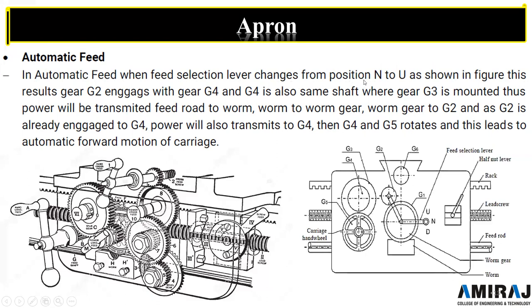For automatic feed: when the feed selector lever changes from position N to U, or automatic, what happens is that gear G2 comes into contact and engages with gear G4. Gear G4 is on the same shaft where G3 is mounted. Thus the power is transmitted through the feed roll to worm and worm to worm gear, and from worm gear to G2. Since G2 is already engaged with G4, power also transmits to G4, then G4 and G5 rotate, leading to automatic forward motion of the carriage.